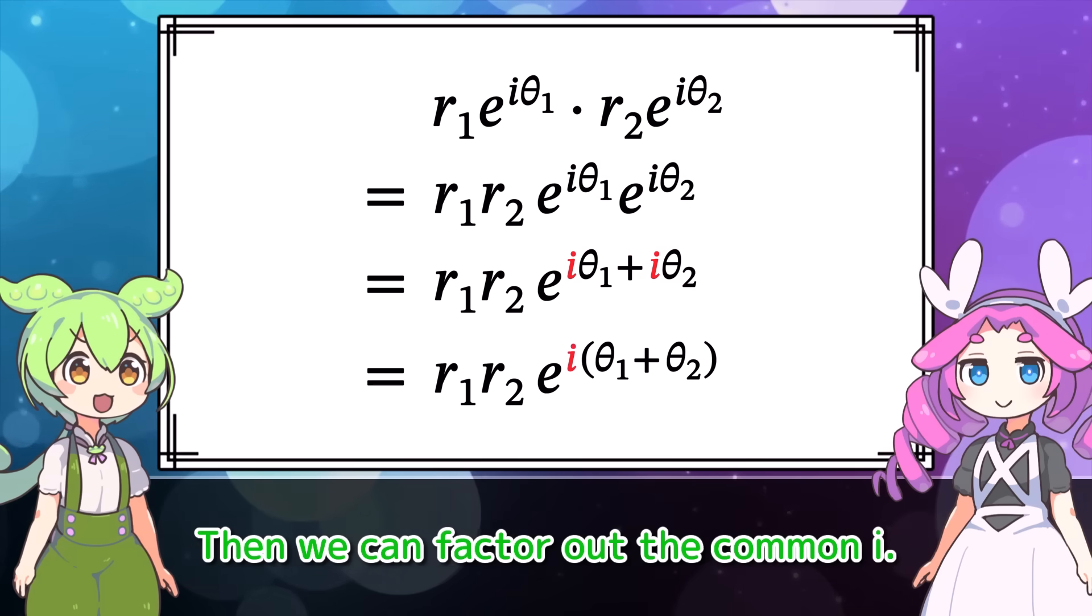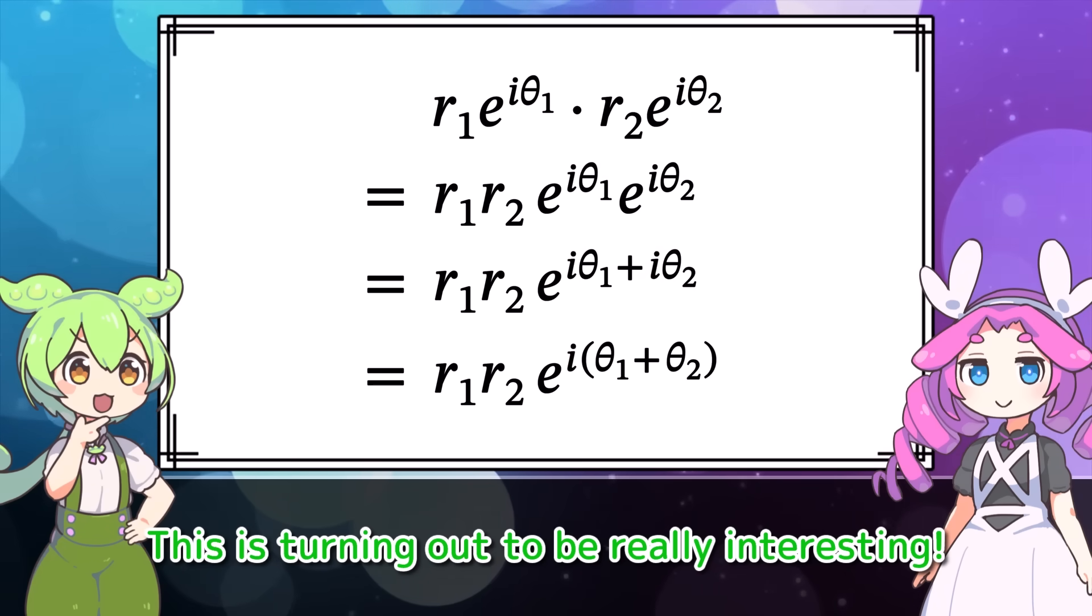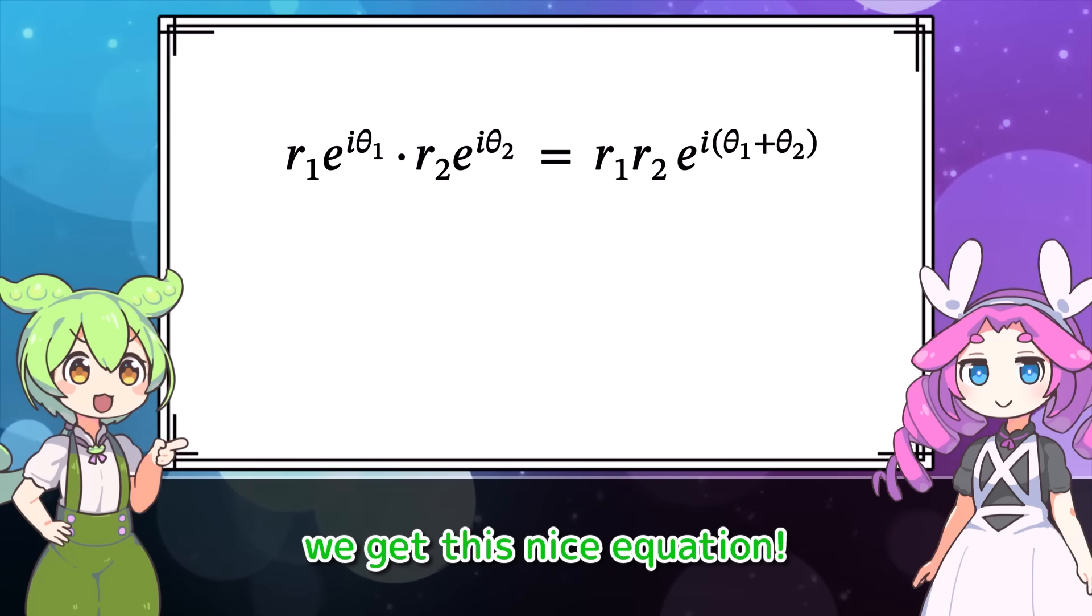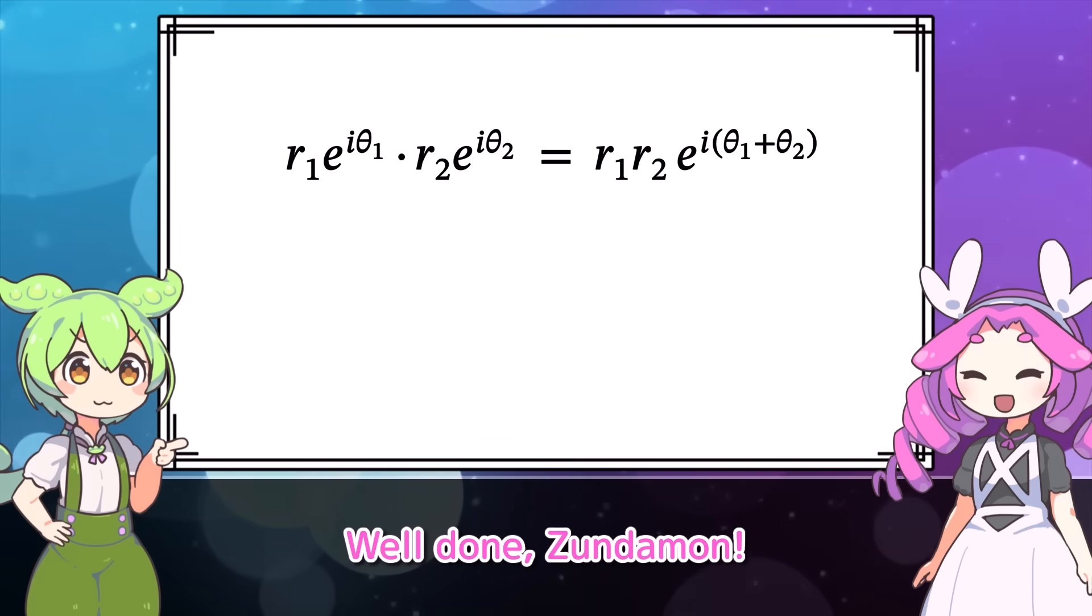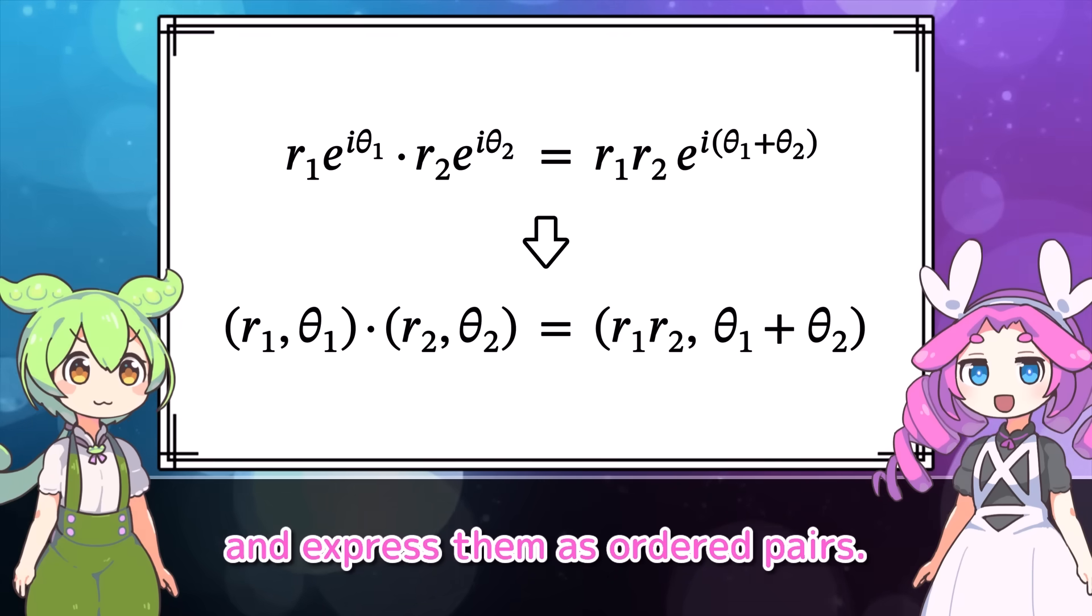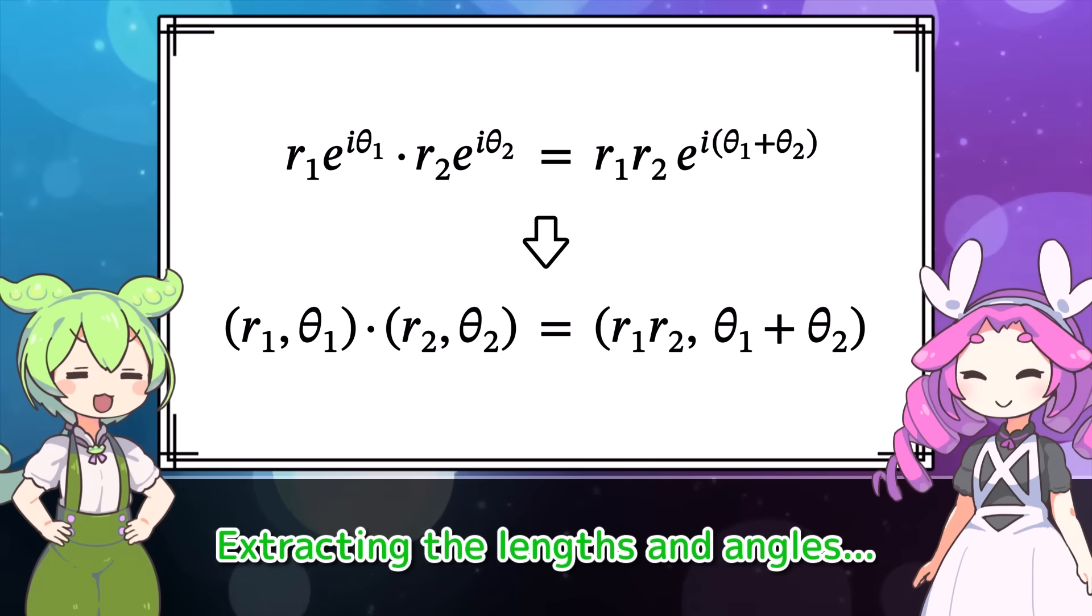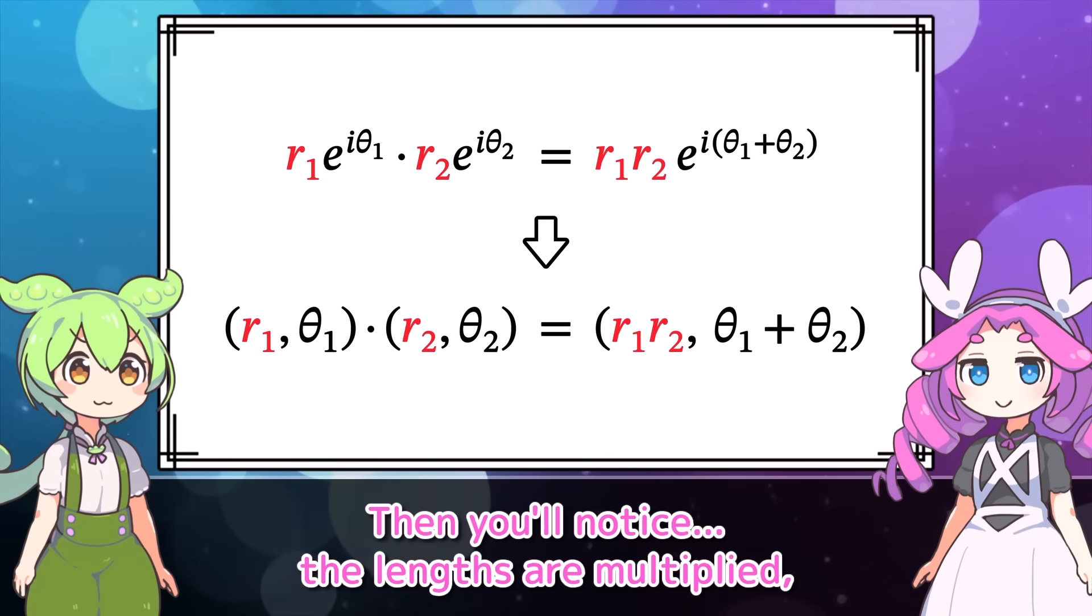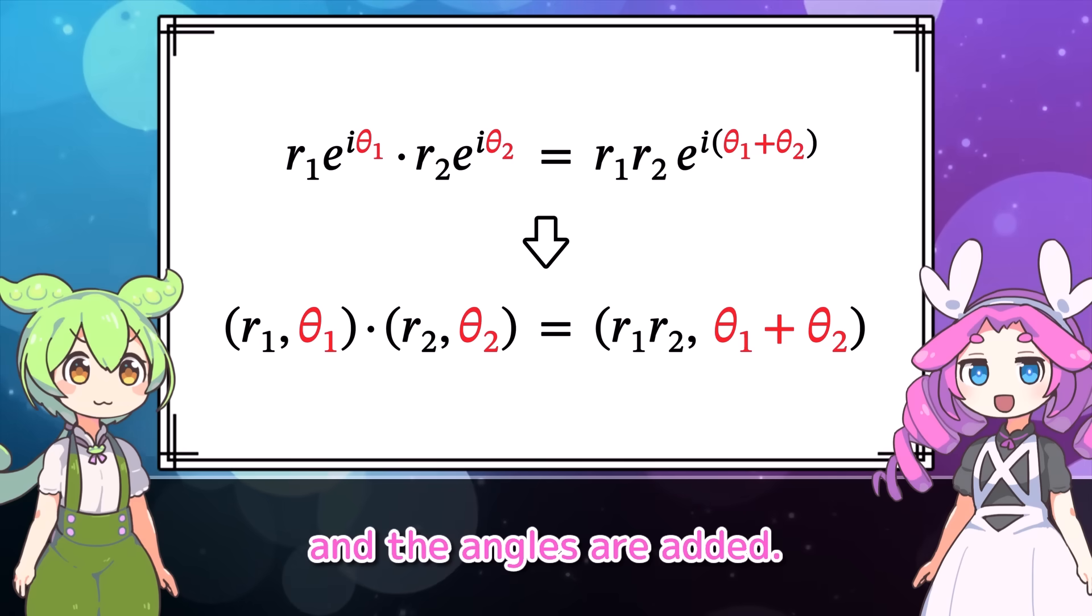So, e^(iθ) is like a vector that sets the direction. If we multiply it by a real number r, then r gives the length and theta gives the direction. That means we can represent any complex number. Yes! This is called the polar form of a complex number. So the point we previously wrote as r∠θ corresponds to the complex number re^(iθ). That makes things feel a lot clearer.